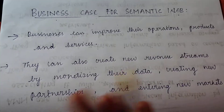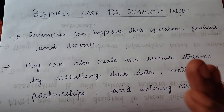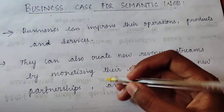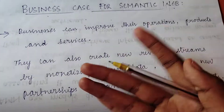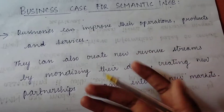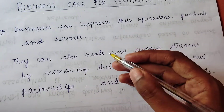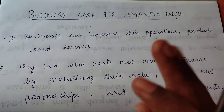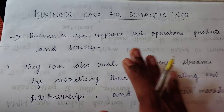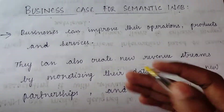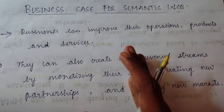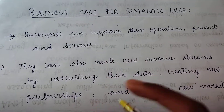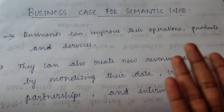Before going into the topic, let's go with an example to understand the concept clearly. Let's say you have an e-commerce website — e-commerce is where you're selling things online — and your website is selling some kind of shoes. By using Semantic Web technologies, we can improve the way your customers are searching for shoes on your site.